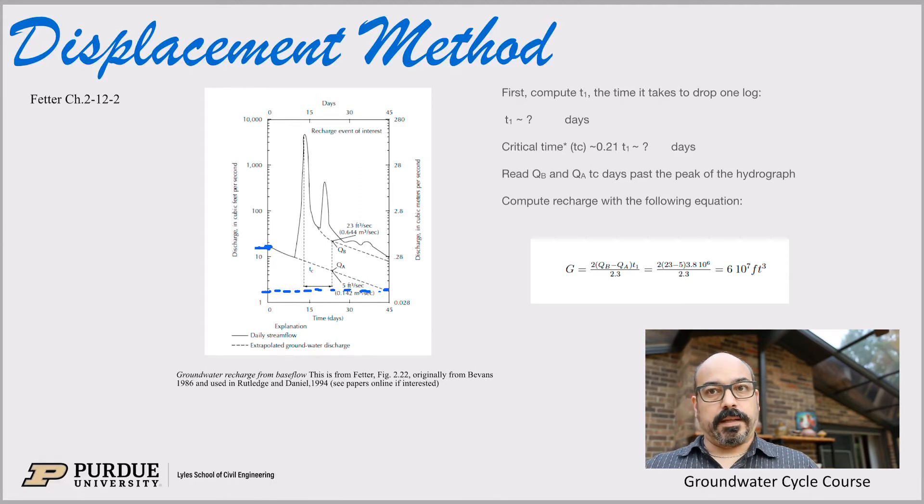And then the critical time, I'll define that a little better in the next slide. But for now, just running through the method. So you calculate or you read how long it takes to drop one log. Then you calculate that critical time. And again, I'll define that later, which is about 0.2 the T1, so 20% ish, a little more than T1.